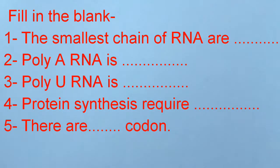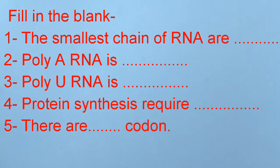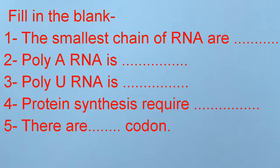Fill in the blank. Number 1: The smallest chain of RNA are ___. Number 2: Poly-RNA is ___. Number 3: Poly-U-RNA is ___.